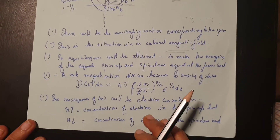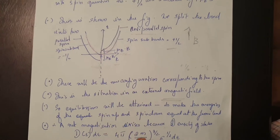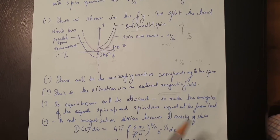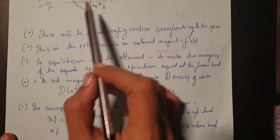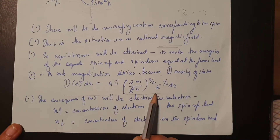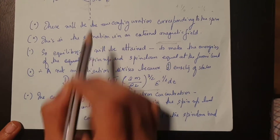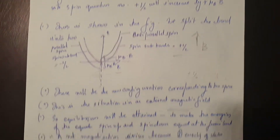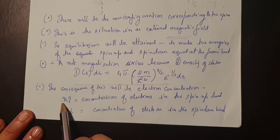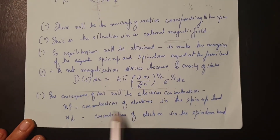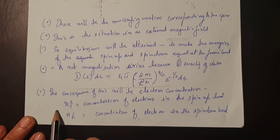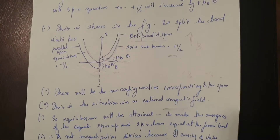The system does not favor this imbalance, so at the Fermi energy it tries to restore balance, and there is a net magnetization because of this. The main reason for the imbalance is the density of states. Because the density of states changes for anti-parallel and parallel spins, the concentration of electrons with spin up will be different from the concentration of electrons with spin down, causing a splitting between the spin-up band and the spin-down band.